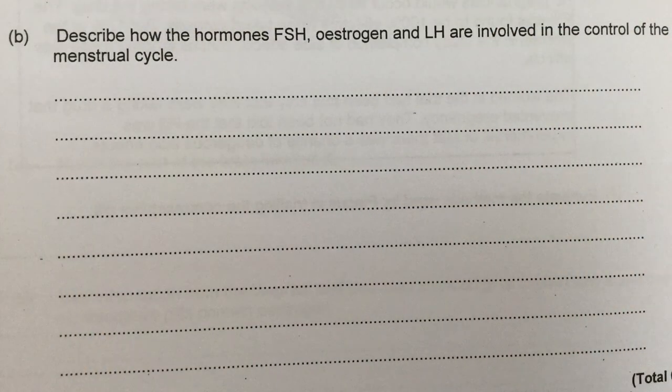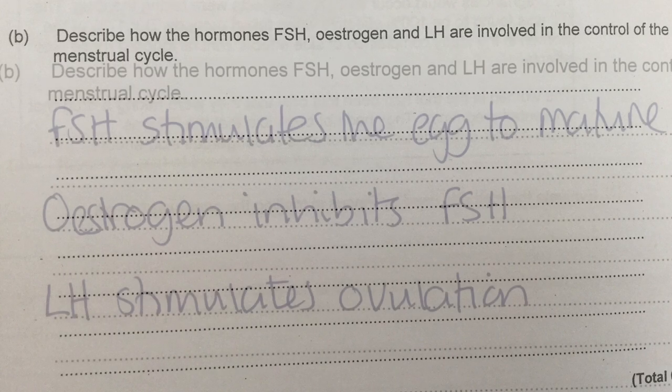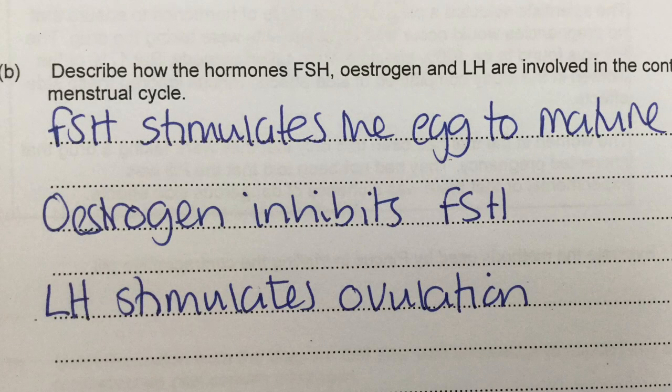Describe how the hormones FSH, oestrogen, and LH are involved in the control of the menstrual cycle. It's a three-mark question with a lot of space — do not feel the need to fill it. We're clearly going to say one thing about each hormone: FSH stimulates the egg to mature, or alternatively that FSH stimulates oestrogen production. We cannot say FSH causes egg release. Oestrogen inhibits FSH, and LH stimulates ovulation.